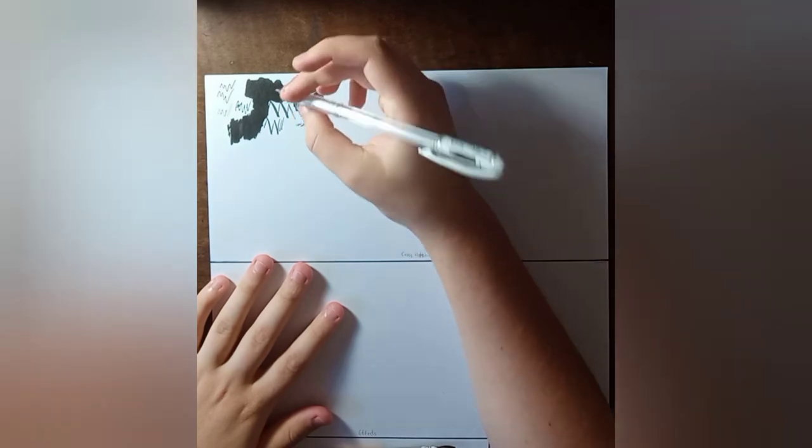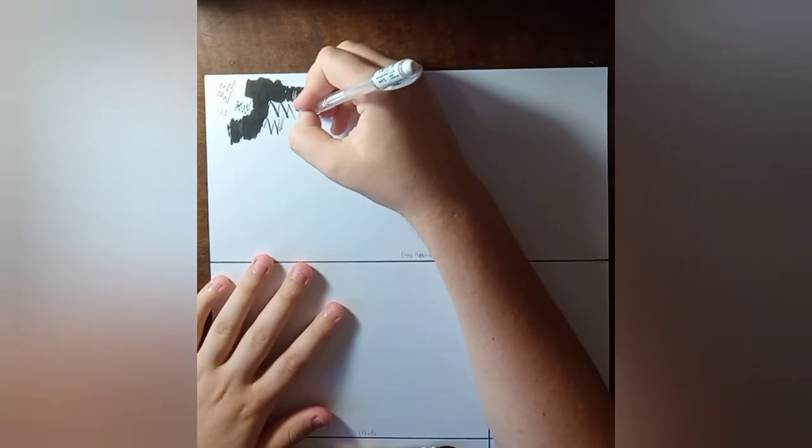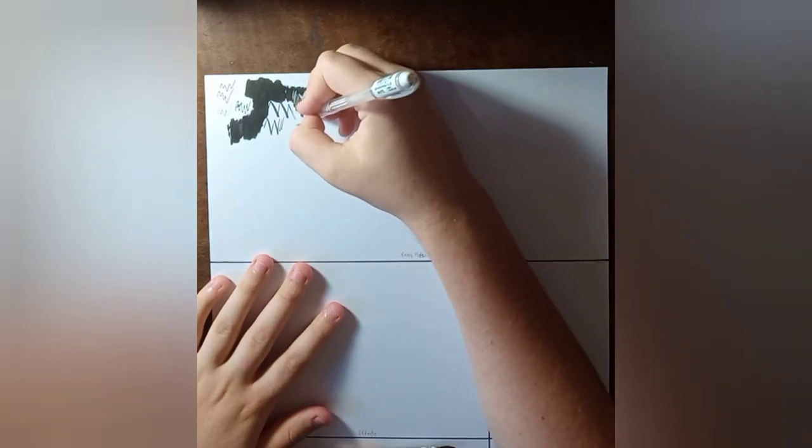And this is a Uni Ball Signo Angelic White Pen. And this is thinner than the PC3M Uni Posca. But the Posca's have brush tips and fineliner tips all in white. So you can definitely get the same size of the Uni Ball with the Uni Posca. And it won't really cost you that much or that much less.